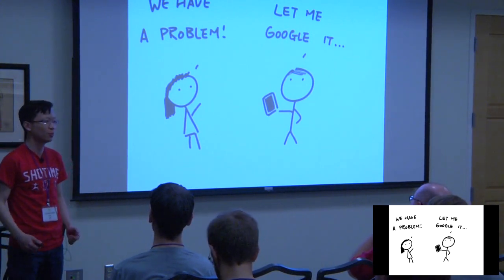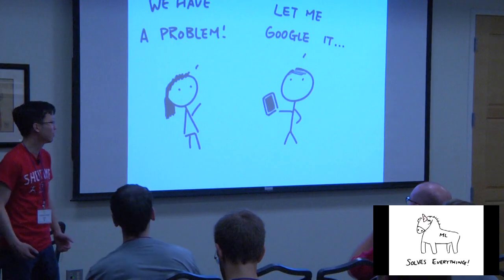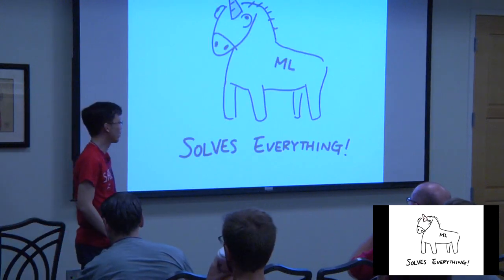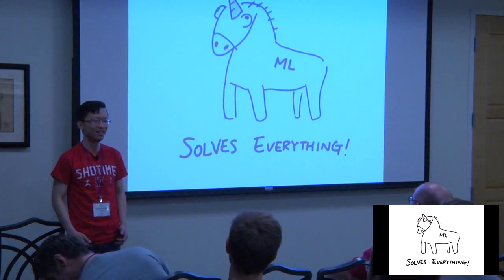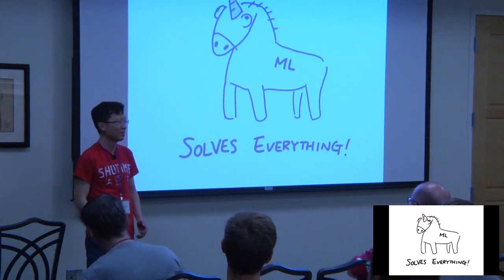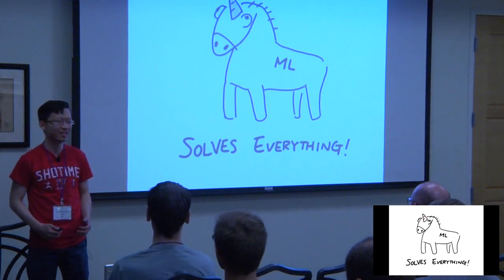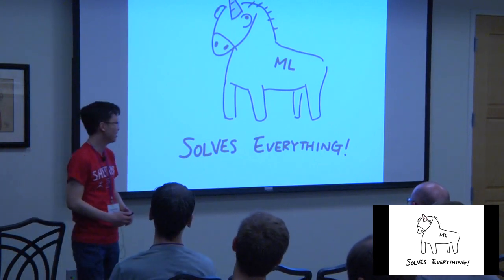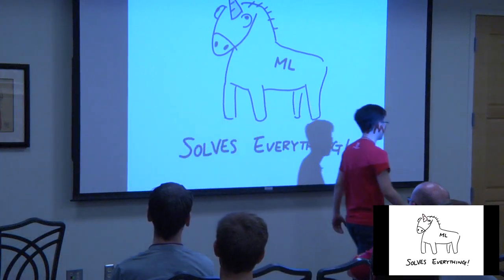So you go on Google, you put in data, solve problem, X, Y, Z. And out comes the machine learning unicorn. Because it does solve everything. Is that true? Well, I'm not saying it's not true. It does solve tons of problems.